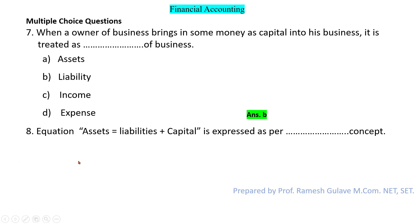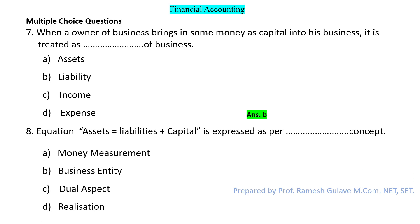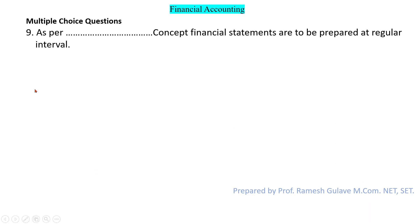The next question says: the equation Assets = Liabilities + Capital is expressed as per dash concept. This equation is expressed as per the dual aspect concept — Assets = Liabilities + Capital. So the answer for question number eight is option C.